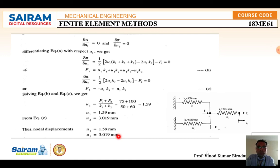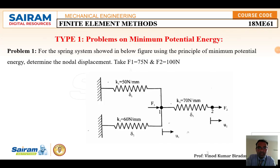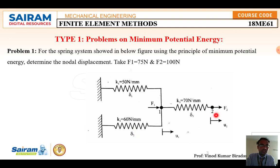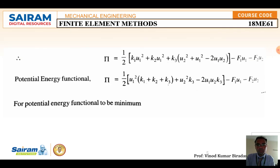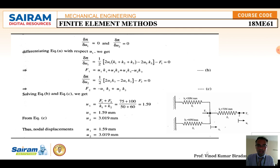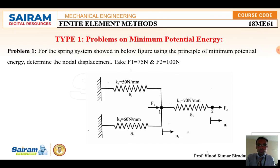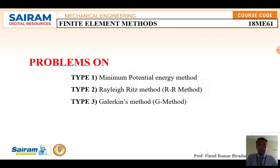This is how you solve numerical problems based on minimum potential energy. The key step is correctly assuming the delta values: delta1 = u1, delta2 = u1 (for springs at node 1), and delta3 = u2 − u1 (for the spring between nodes). The remaining procedure — deriving pi, applying the minimum condition by differentiation, and solving — is standard. The final answers are u1 = 1.59 mm and u2 = 3.019 mm.